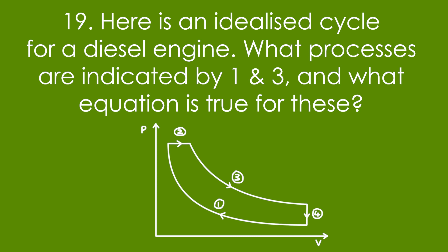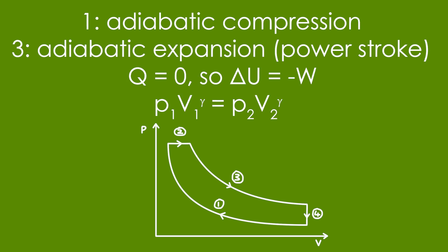Question 19: Here is an idealized cycle for a diesel engine. What processes are indicated by 1 and 3, and what equation is true for these? Process 1 is adiabatic compression, and process 3 is adiabatic expansion — also known as the power stroke. Because it's adiabatic, Q = 0, so ΔU = W. More importantly, PV^γ is constant between beginning and end, gamma being the adiabatic constant.